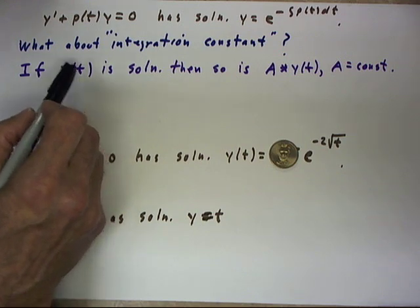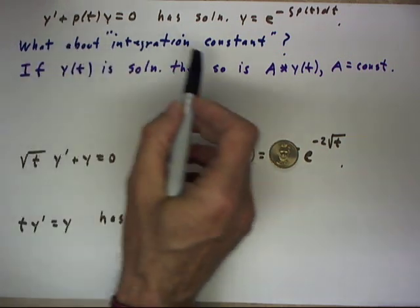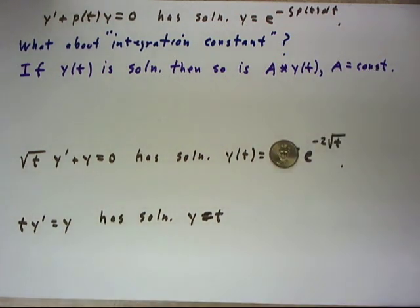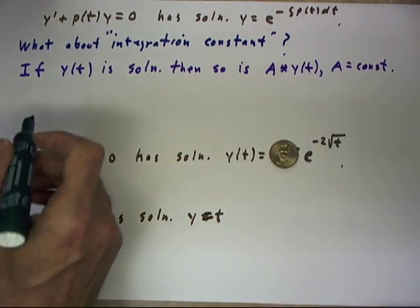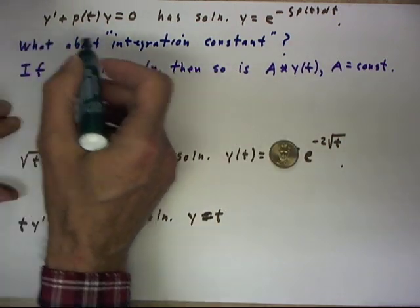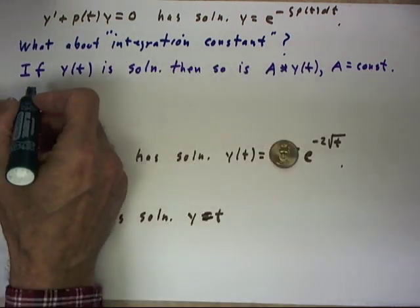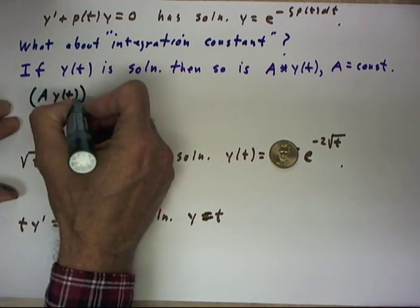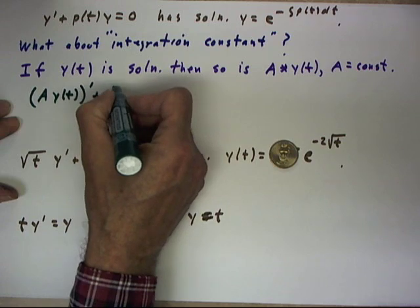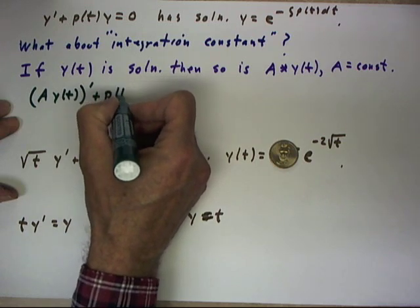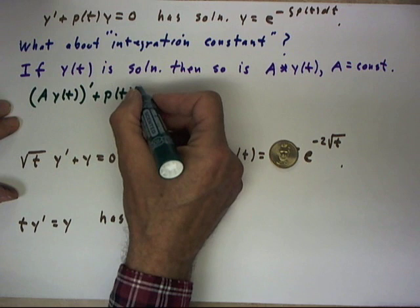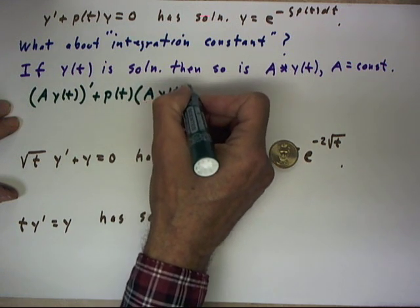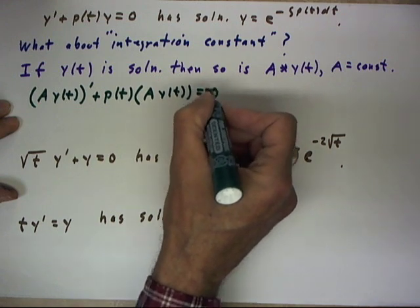If y(t) is a solution to this equation, then so is A times y(t) where A is any constant. And to see this, we can just let, instead of substituting just y, let's substitute A times y(t). So Ay(t)' + p(t) times y, which would be p(t) times Ay(t), should then equal zero.